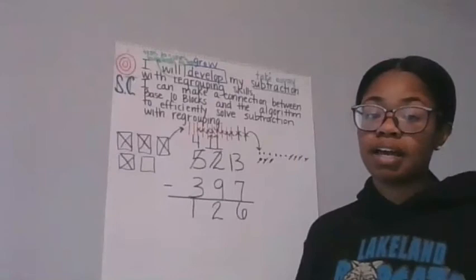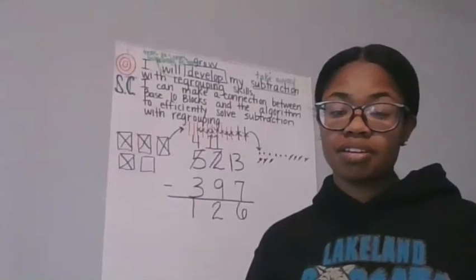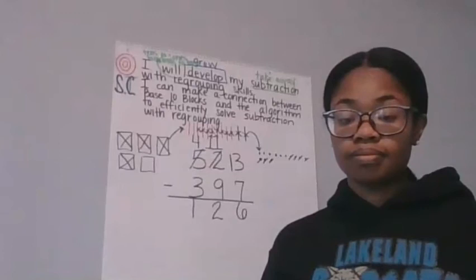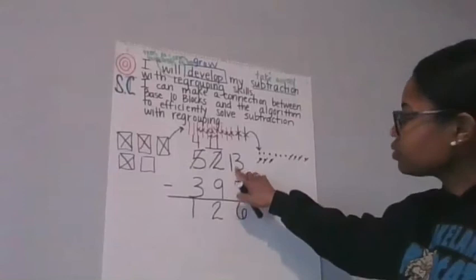Now, going back to my success criteria, it said I will make a connection between the base 10 blocks and the algorithm. Can you share with yourself or someone at your house? What's the connection that you see between the base 10 blocks and the algorithm? All right. Here are the connections that I see.